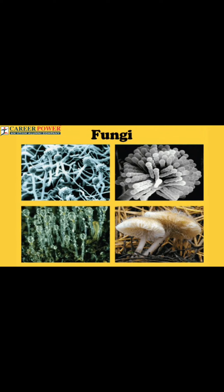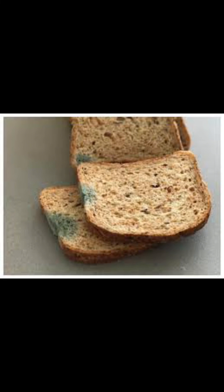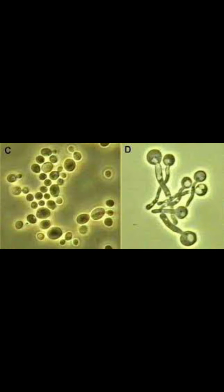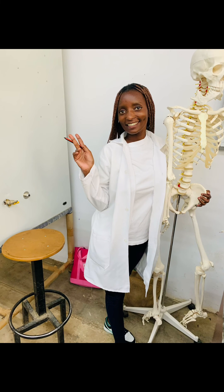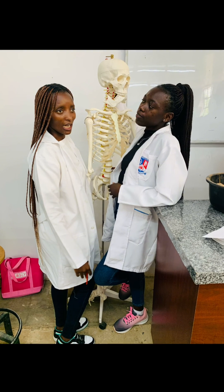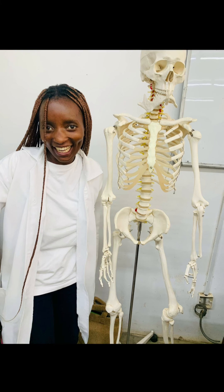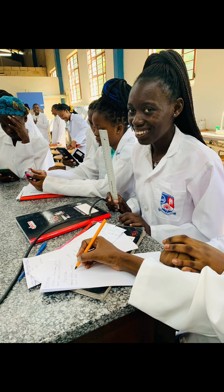A fungus is any member of the group of eukaryotic organisms that includes microorganisms such as yeasts and molds. This is Candida tropicalis yeast, and this is the Rhizopus mold, mostly found on bread. Here we have Cryptococcus and Candida. Then we have a protozoa. Microbiology is the discipline that includes fundamental research on the biochemistry, physiology, cell biology, ecology, evolution, and clinical aspects of microorganisms, including the host response to these agents.